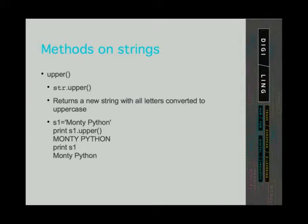Here we have to realize that the method returns a new string. That means that our original string s1 has not changed. Because strings are immutable, they cannot change without creating a new string. We can check this by printing the original string and we will see that it is still the same. If we wanted to store this change, we have to assign the change to a variable.